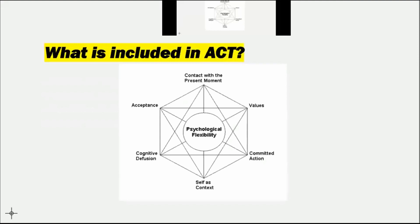These are the six processes that make up ACT. At the middle of everything we have what's called Psychological Flexibility, and the definition of that refers back to all the processes illustrated in what's called the Hexaflex. At the top we have contact with the present moment; we also have values, committed action, self-as-context, cognitive diffusion, and acceptance. With this Hexaflex, there is no direct order — it doesn't start at one specific one and go all the way around. It can be that if somebody is implementing ACT with a client or with themselves, they can really start at any point.